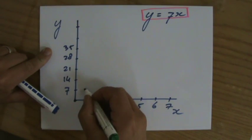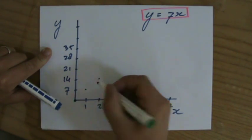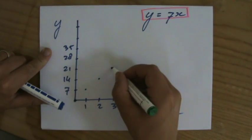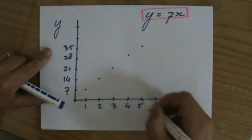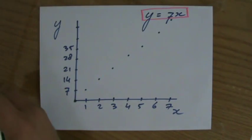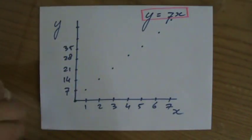When x is 1, y is 7. When x is 2, y is 14. When x is 3, y is 21. 4 is 28, 5 is 35, 6 is 42, 7 is 49. This is just a sketch. If they ask you to draw it properly, you're going to do it with a ruler.